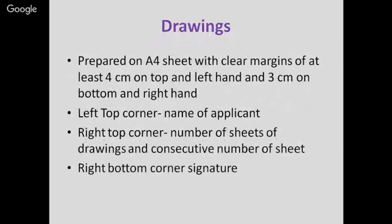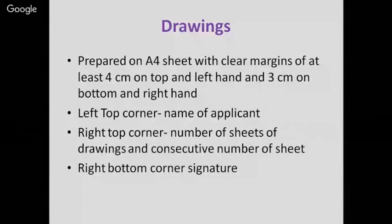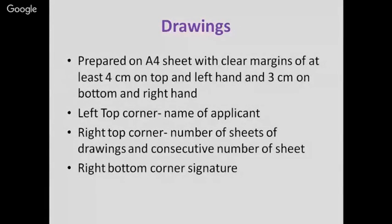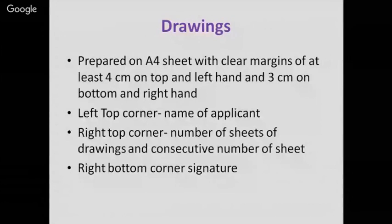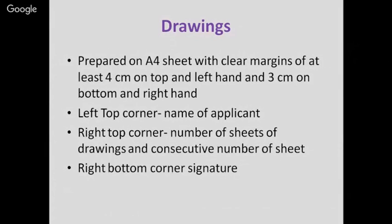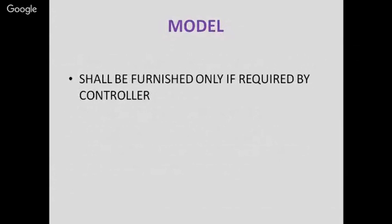Technical drawings are prepared on A4 sheet with clear margins of at least 4 cm at the top and left-hand side and 3 cm on the bottom and right-hand side. In the top-left corner is the name of the applicant, and on the right-hand corner the number of sheets and consecutive sheet number — for example, 1/5 for the first sheet, 2/5 for the second, up to 5/5. On the right bottom corner, the signature of the applicant is required. A model of the invention may be required if the controller requests it.